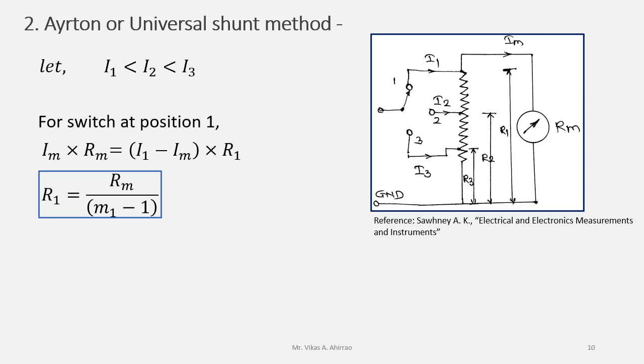When the switch will be at position 2, then i1 will not flow because we are feeding i2 and hence we can write im into rm plus r1 minus r2 equals i2 minus im into r2.